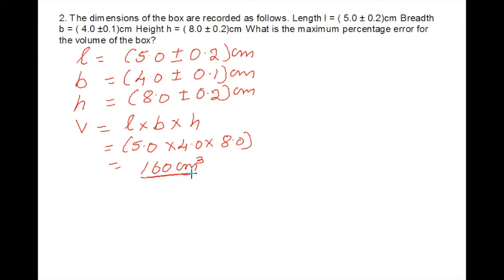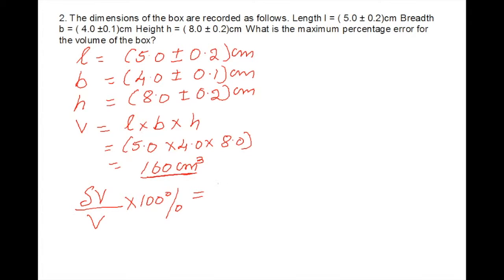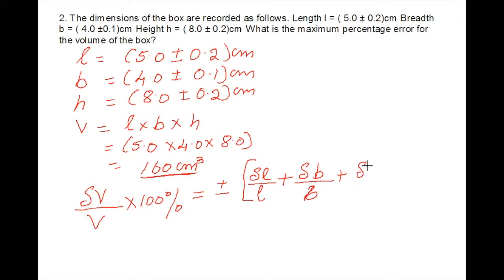Now we calculate the maximum percentage uncertainty in the volume. Delta V divided by V times 100% equals plus or minus: uncertainty in length divided by length, plus uncertainty in breadth divided by breadth, plus uncertainty in height divided by height — all times 100%.